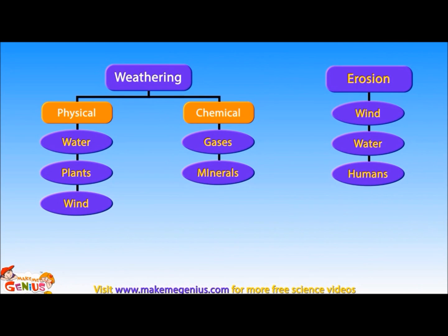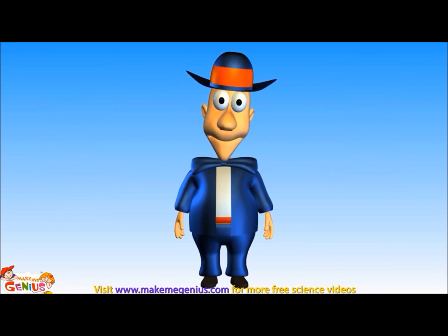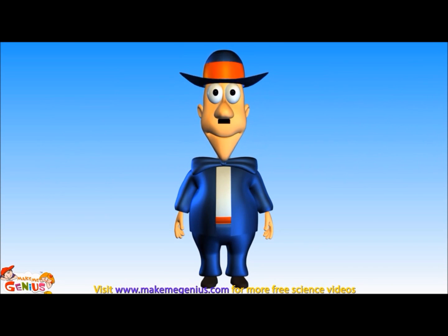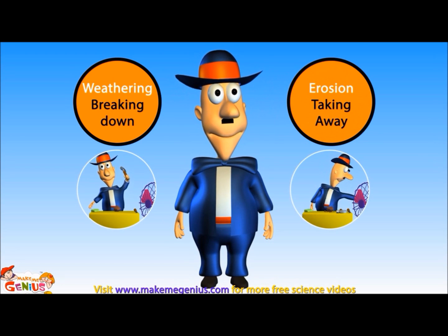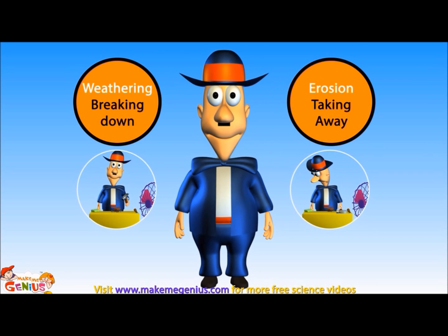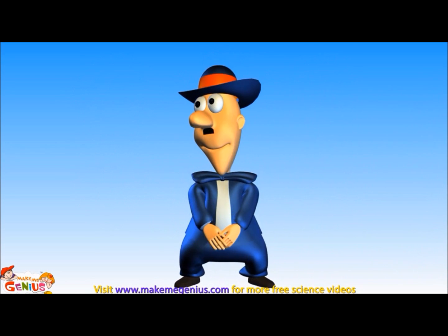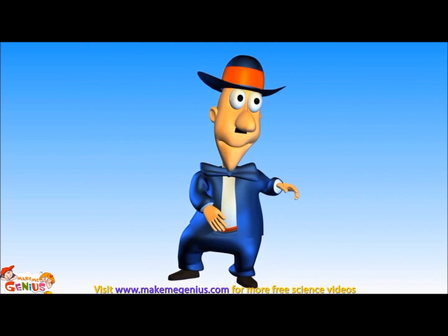So we learned today that weathering and erosion are two major factors which keep changing the world around us, and they keep working together at the same time. We also learned about different kinds of weathering and erosion. Are you ready for your test now? Tell me the two secret codes of weathering and erosion. Very good! I hope that you get another 10 out of 10 on your test! You can keep dancing!